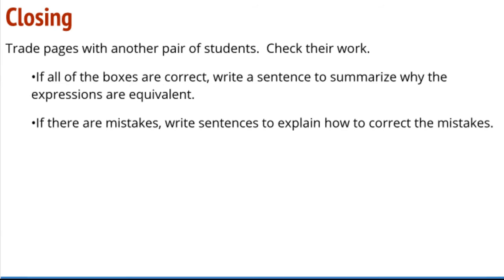So your closing activity if you were in class is that you would trade pages with another pair of students and you would look over their work. And if all their boxes are correct you would write a sentence and summarize why the expressions that they have written are equivalent. If you look at some of their expressions and you notice that there are errors, that there are mistakes, then you would need to write a sentence explaining what would be necessary to correct the mistakes. If I had to make any guess, one of the big missing things is going to be parentheses in the horizontal forms.